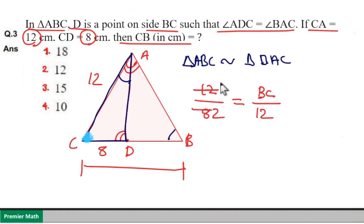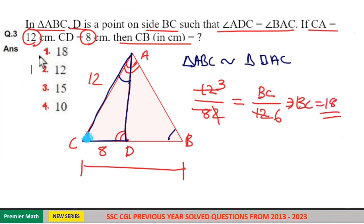12 over 8 equals BC over 12. Cross multiplying, BC equals 18. Option 1 is your answer.